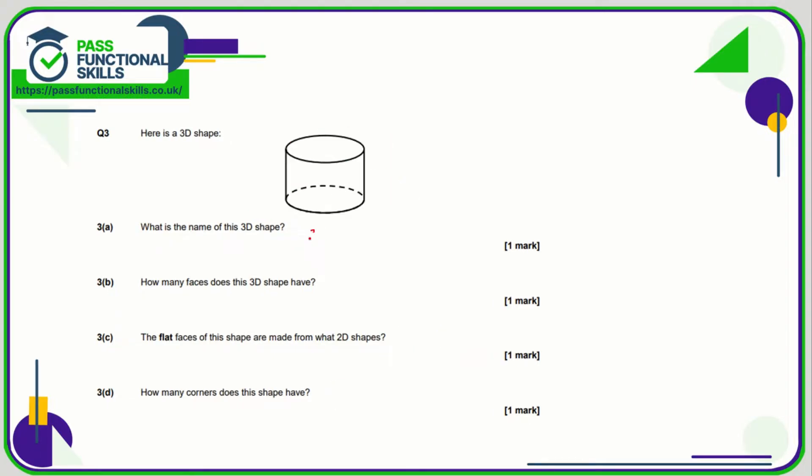This shape here is called a cylinder. How many faces does it have? Well it has one, two, and then this one here which goes all the way around, so it's three in total. The flat faces - that's the bottom and the top, the circles - not this part here, are made from circles obviously.